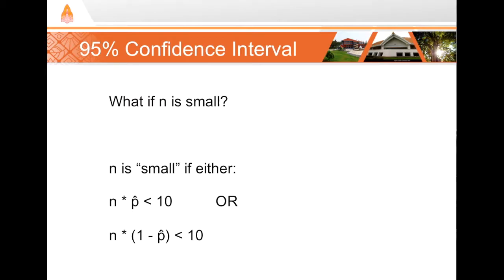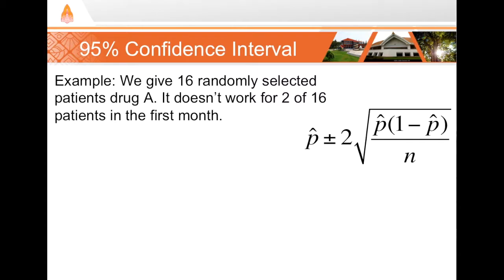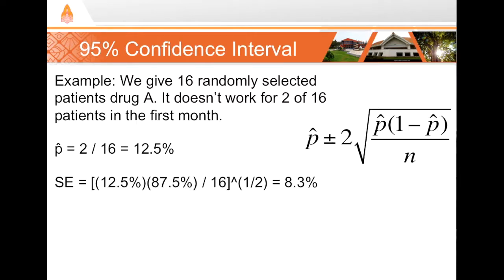Imagine we give a drug to 16 randomly selected patients and measure its efficacy. After one month, the drug was not efficacious for 2 of the 16 people. Computing p-hat gives 12.5%. The standard error is 8.3%, so the 95% confidence interval would be p-hat plus or minus two times the standard error — giving a range from negative 5% to 28%. Negative 5% is not possible, so this approach breaks down.